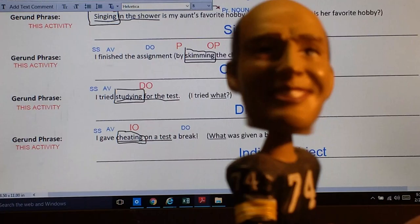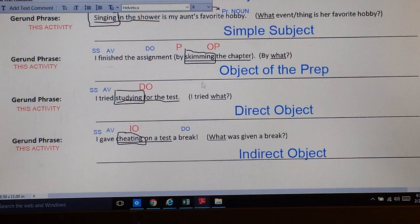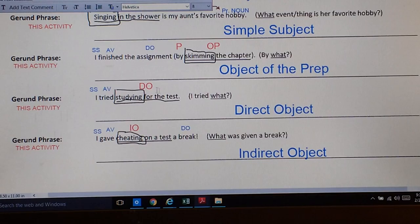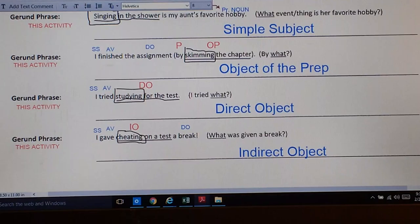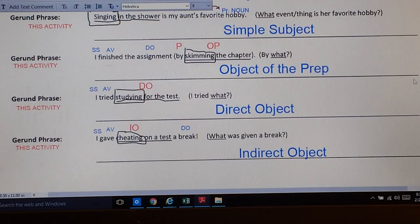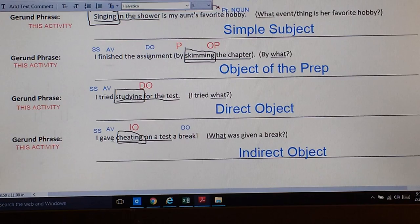The next one. I tried studying for the test. Oh, look at that. Mr. Southerton's sister just sent him a Facebook message. That's nice. I tried this activity. What activity? Studying. Studying for the test. That stands as the direct object in the sentence.